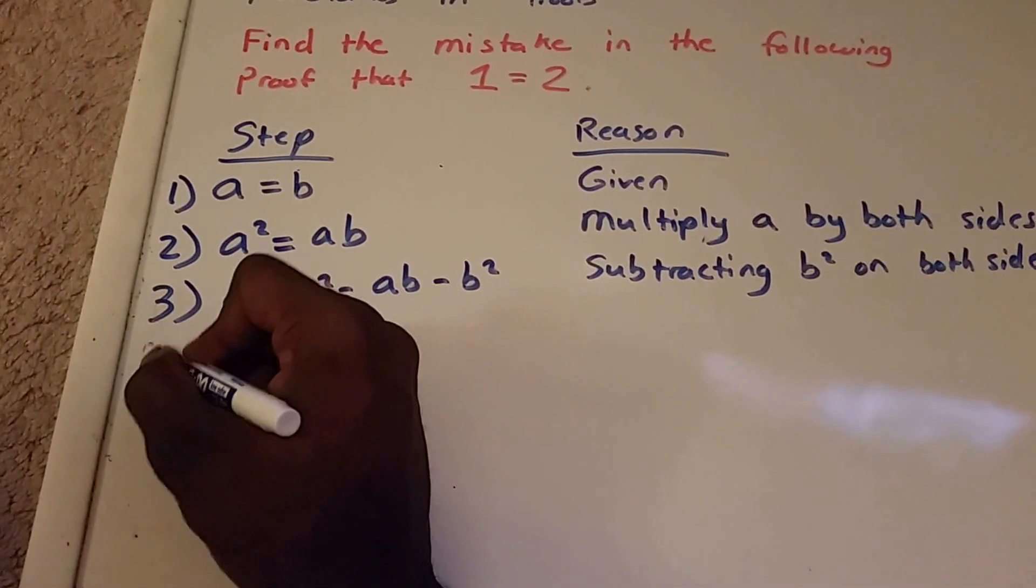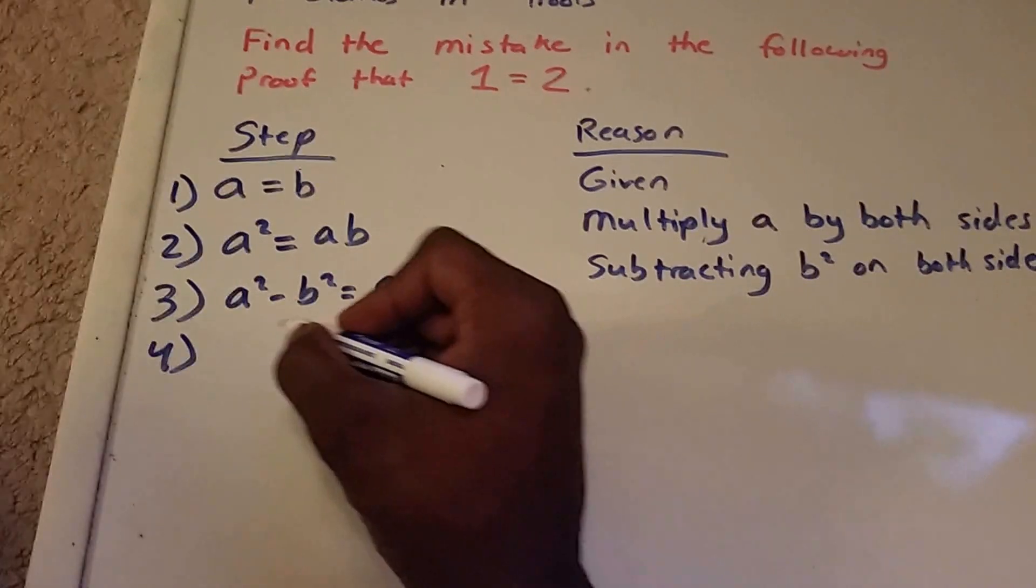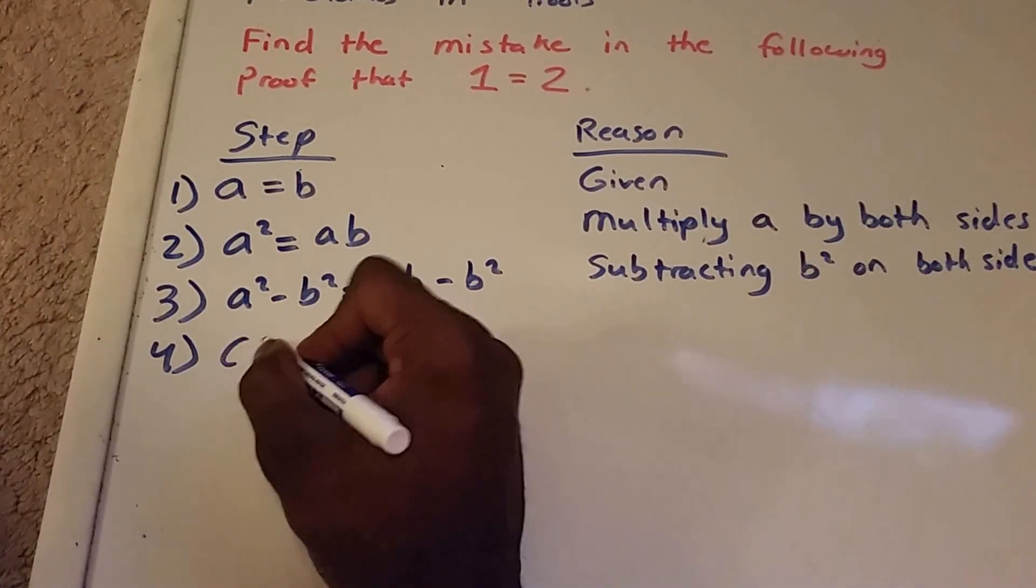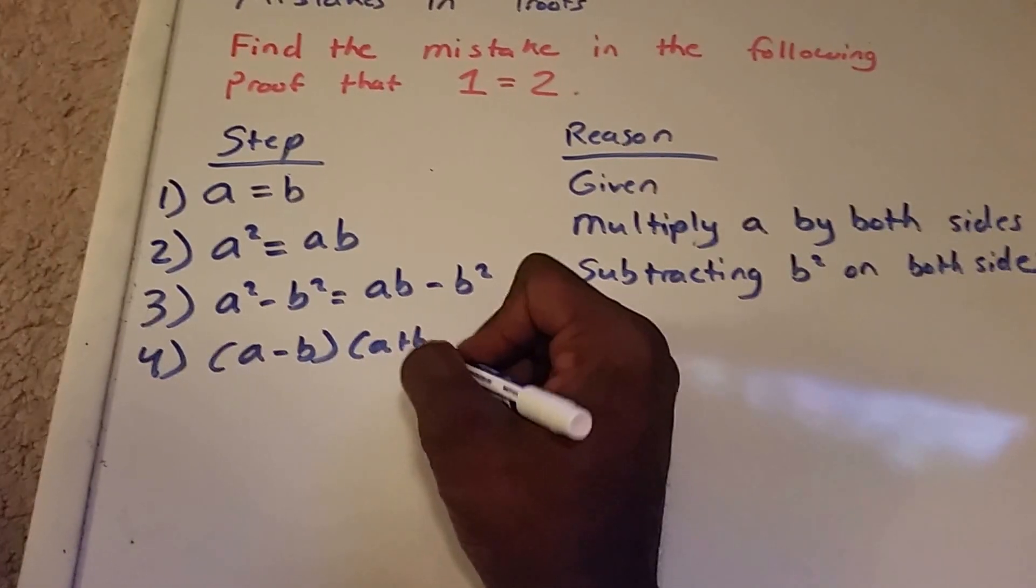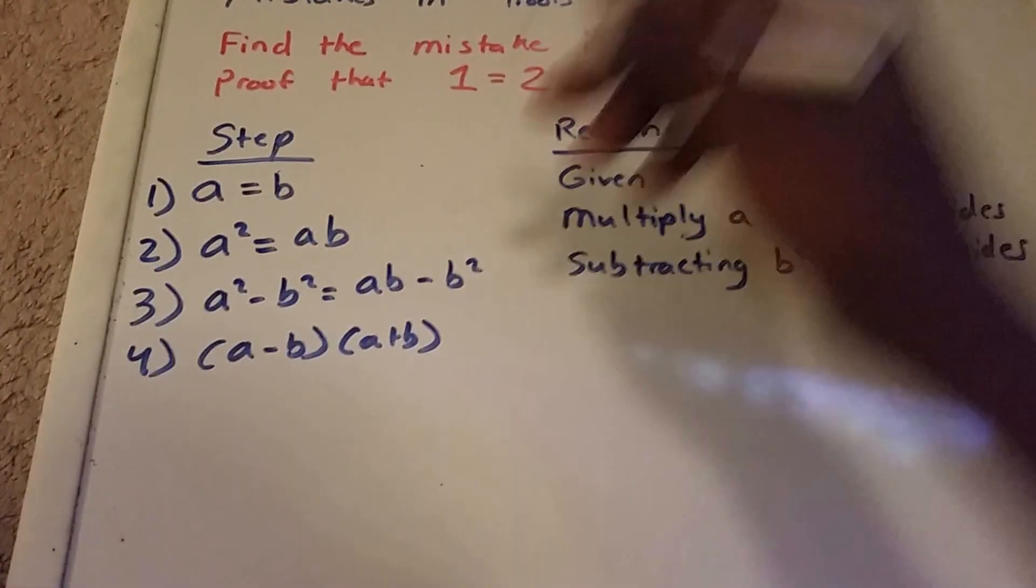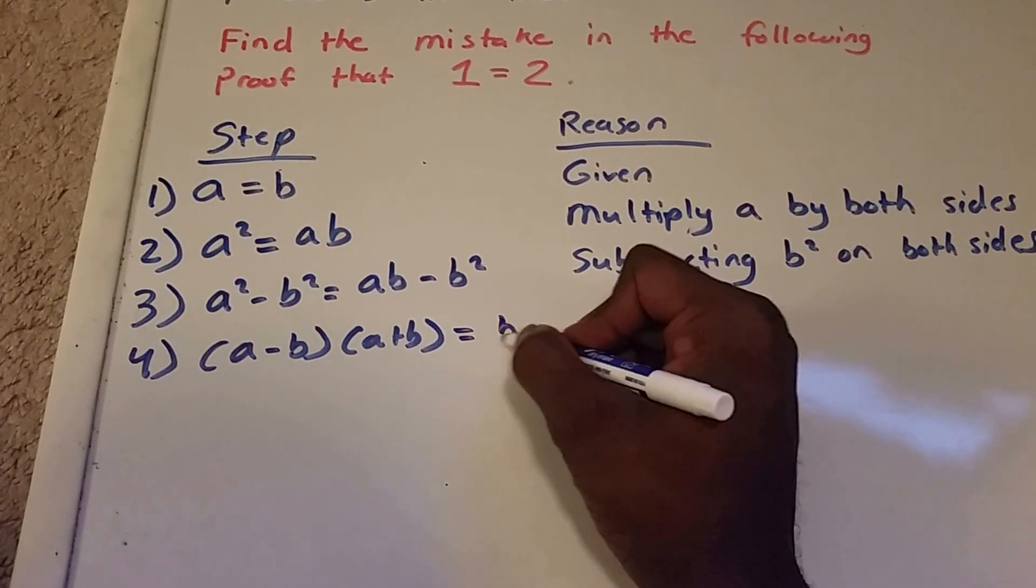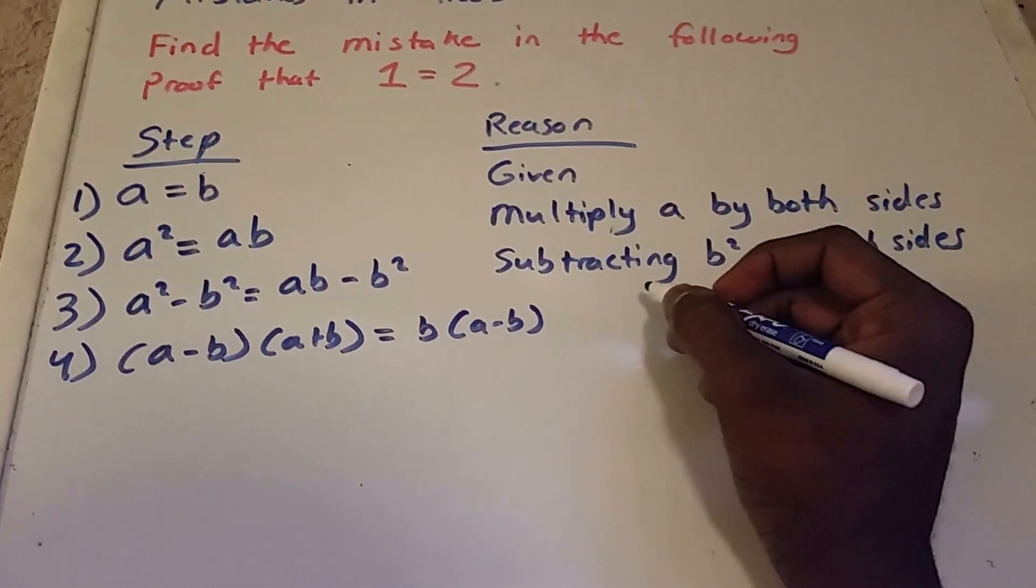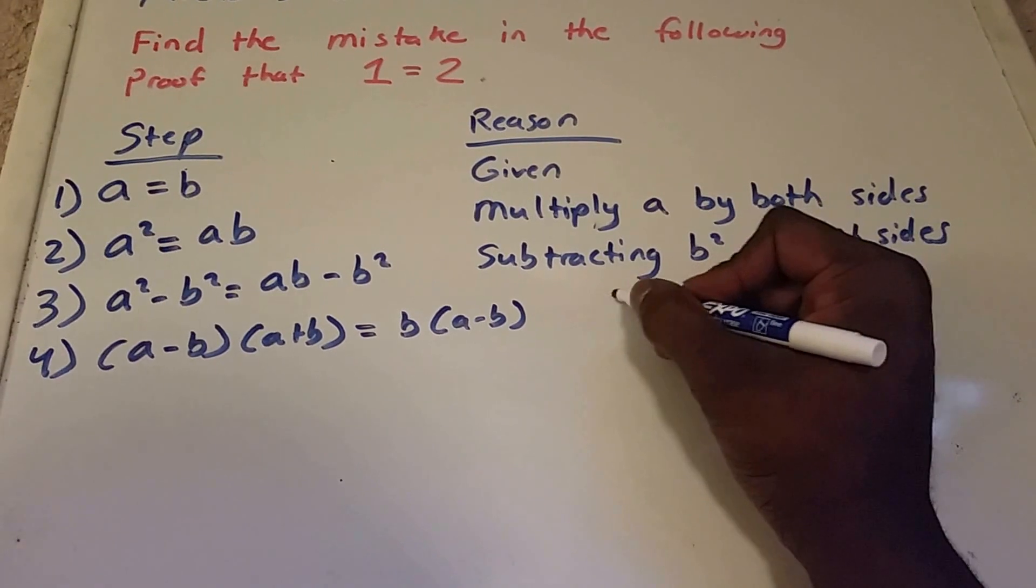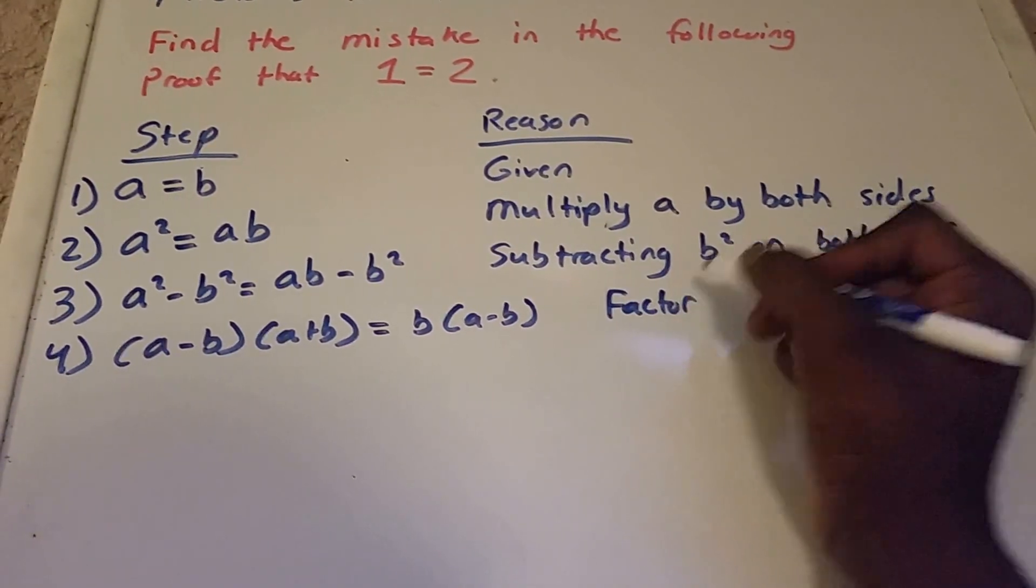Step 4: we're going to do this. Here's a factorization or factoring this out. (a-b)(a+b) equals b(a-b). So here we factored both sides.